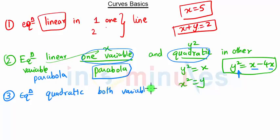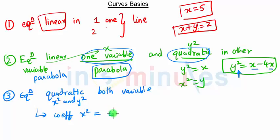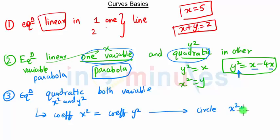Rule 3: the equation is quadratic in both variables — that is, contains x² and y². Whenever we have the equation quadratic in both variables, we check whether the coefficient of x² equals the coefficient of y². If they are equal, the equation represents a circle. For example, x² + y² = a² — coefficient of x² is 1 and coefficient of y² is 1, so it's a circle.